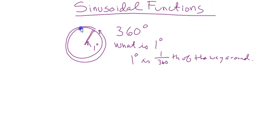If aliens landed on Earth and we said a circle is 360 degrees, they'd say 'why 360? What are you talking about?' So it's arbitrary — somebody chose that number and it just came into common usage.